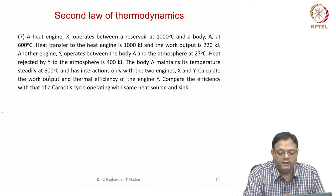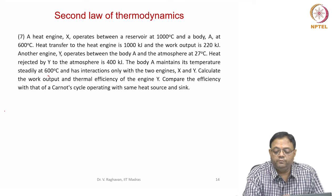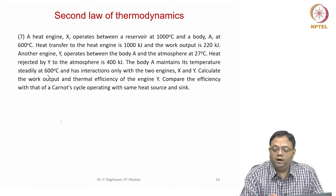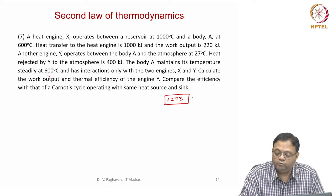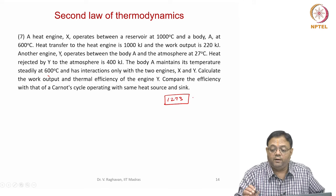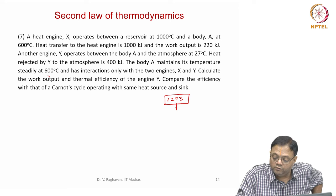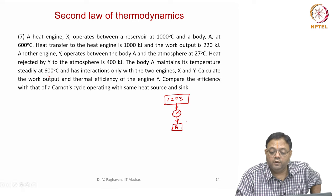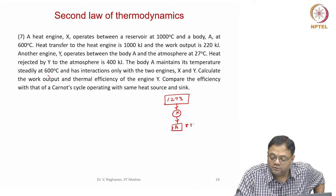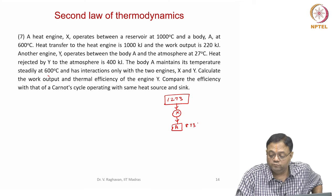Seventh problem: a heat engine X operates between a reservoir at 1000 degrees centigrade, that is 1273 Kelvin, and a body A at 600 degrees centigrade, that is 873 Kelvin.